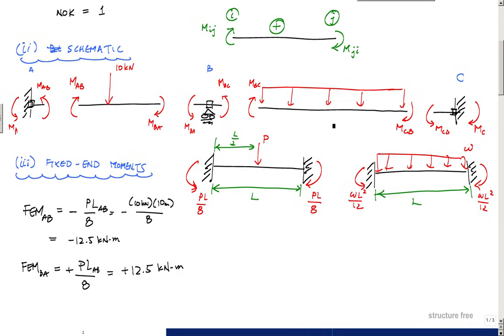I'm going to do the same thing for member BC. For member BC, I would have fixed end moments for BC on this end. Now this WL squared over 12 is in the opposite direction of the way that I have M_BC drawn, and therefore this is minus WL squared over 12. If you plug and chug with 1 kilonewton per meter and L of 20, this is negative 33.33...